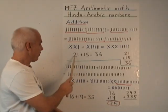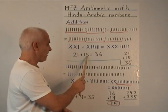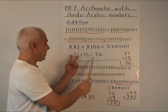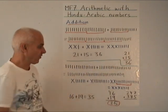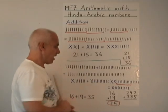With Hindu-Arabic notation, we represent this by 21, two tens and one 1. This by 15, one 10 and five 1s. To add them, we can put them on top of each other like this, and when we add the 1s and we add the tens, we get 36.